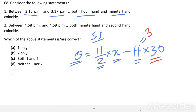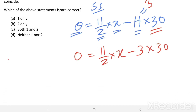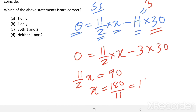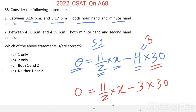When both hands coincide, theta equals 0. So: (11/2) × x = h × 30 = 3 × 30 = 90 degrees. Rearranging, we get (11/2) × x = 90 degrees, so x = 180/11, which equals 16.36 minutes. This falls between 3:16 PM and 3:17 PM, confirming that both the hour hand and minute hand coincide in that interval. Therefore, Statement 1 is correct.